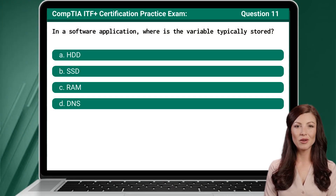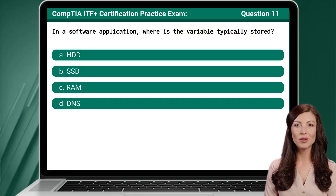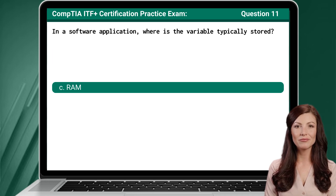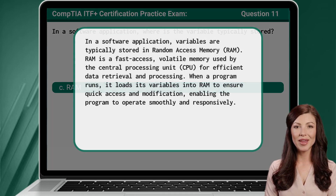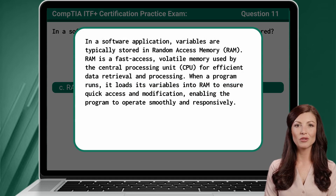Question 11. In a software application, where is the variable typically stored? The answer is C: RAM. In a software application, variables are typically stored in random access memory, or RAM.